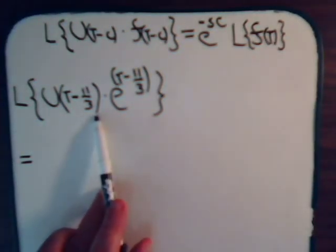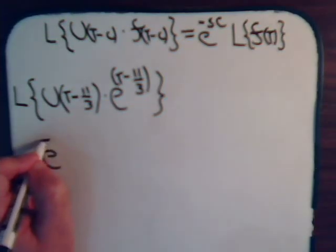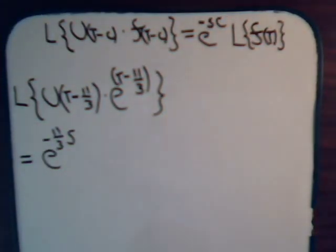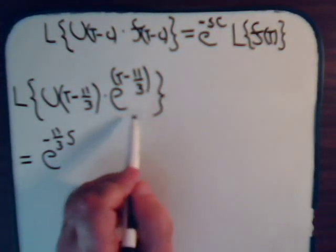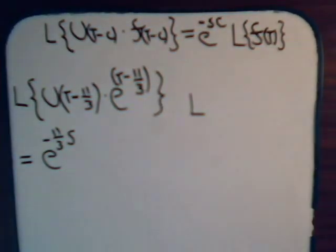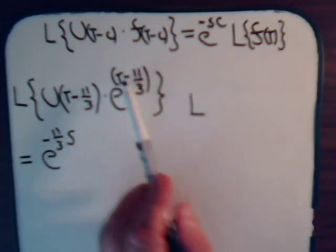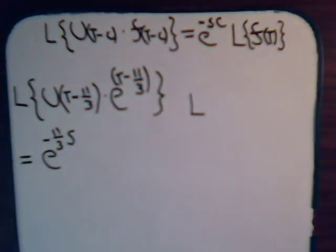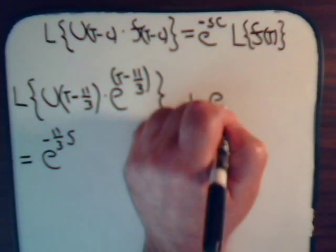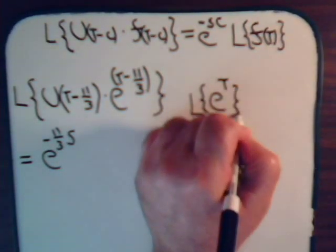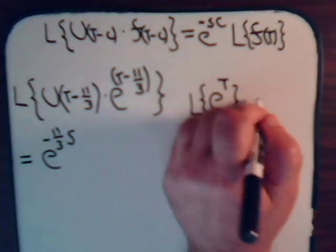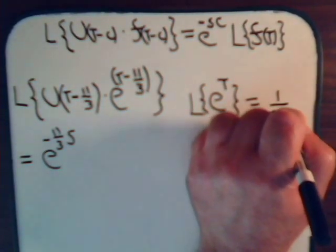that's going to give e to the minus (11/3)s. And for this part of the problem, we want the Laplace transform — not of e to the (t - 11/3), it's not the Laplace transform of f(t-c), but just f(t). So we want the Laplace transform of e to the t. And from our past videos, you should recognize immediately that that is equal to 1 over (s minus 1).